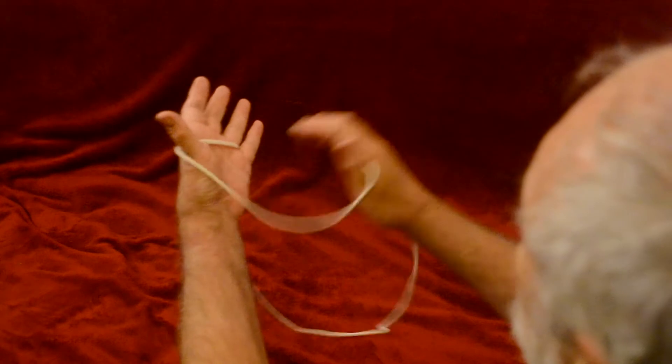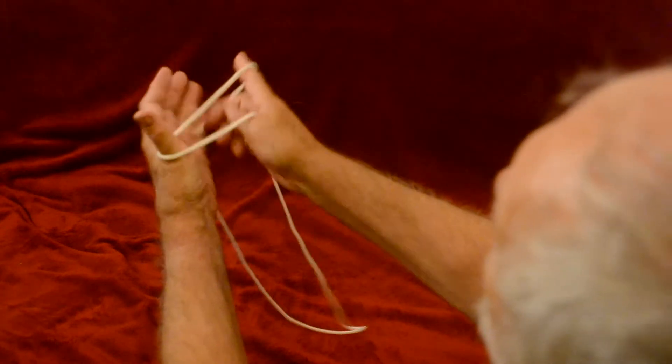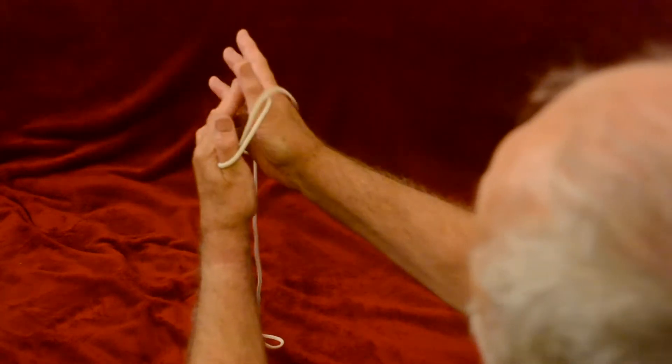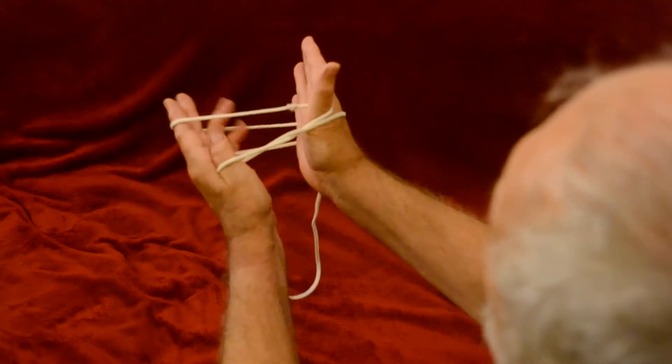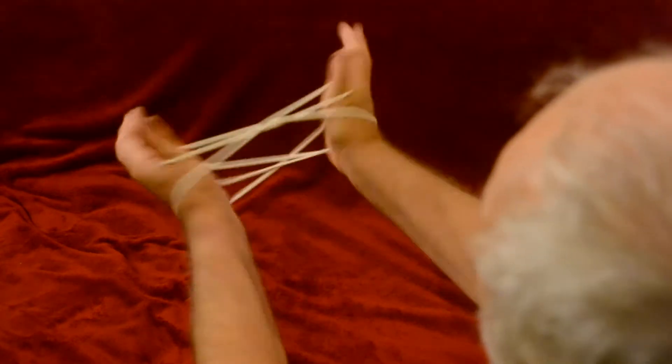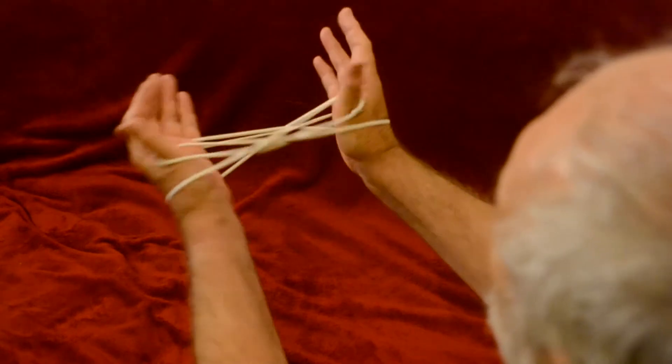Begin with the loop in position one on both hands. Then with the right hand, go under the left palm string and drop that palm string all the way down to the wrist. The left hand goes under the right palm string and drops that string all the way down to the wrist.